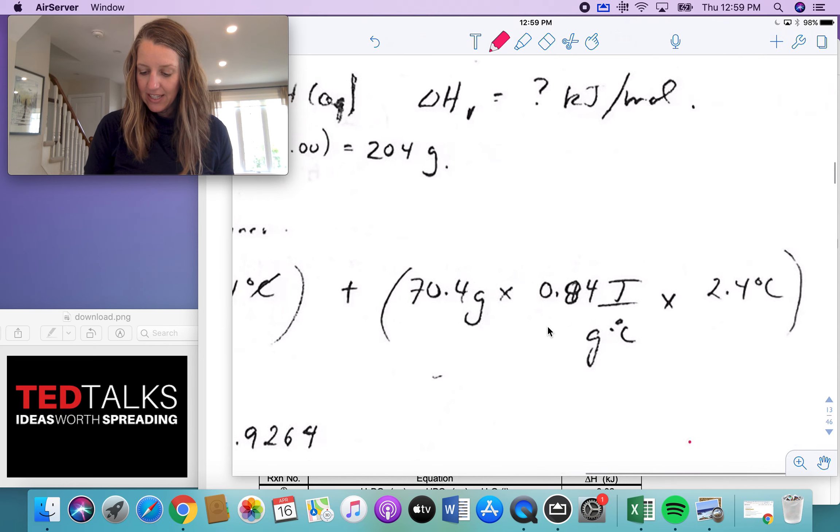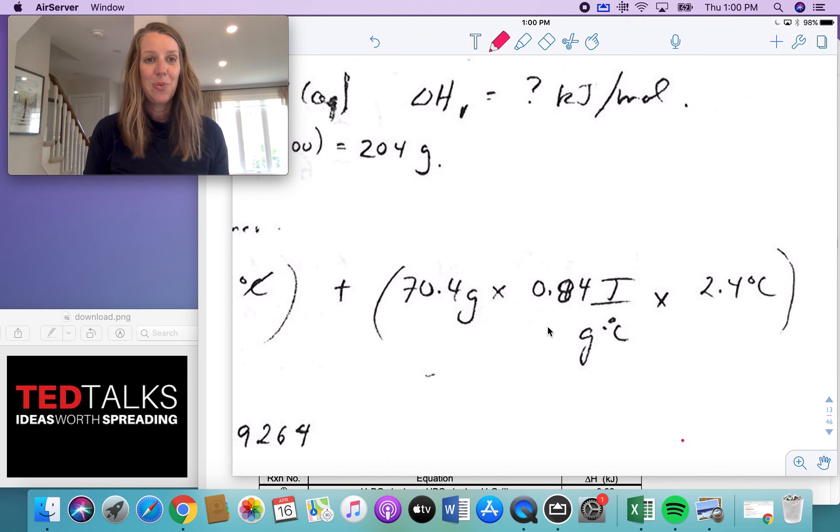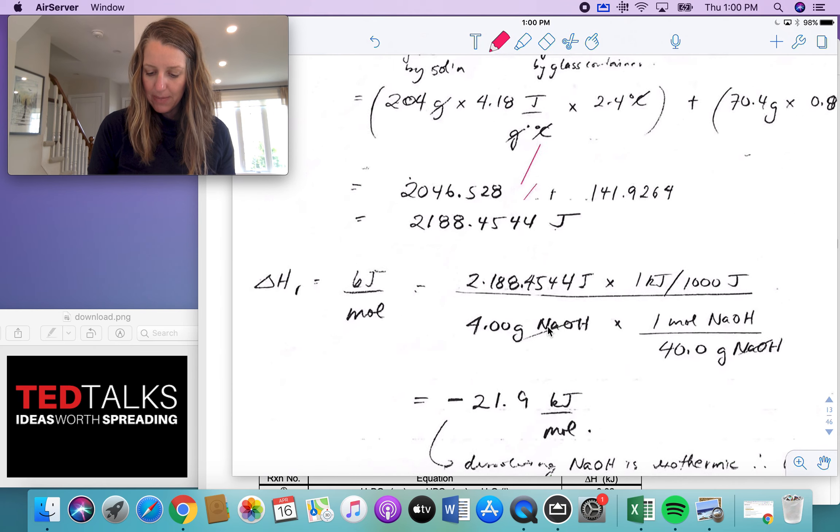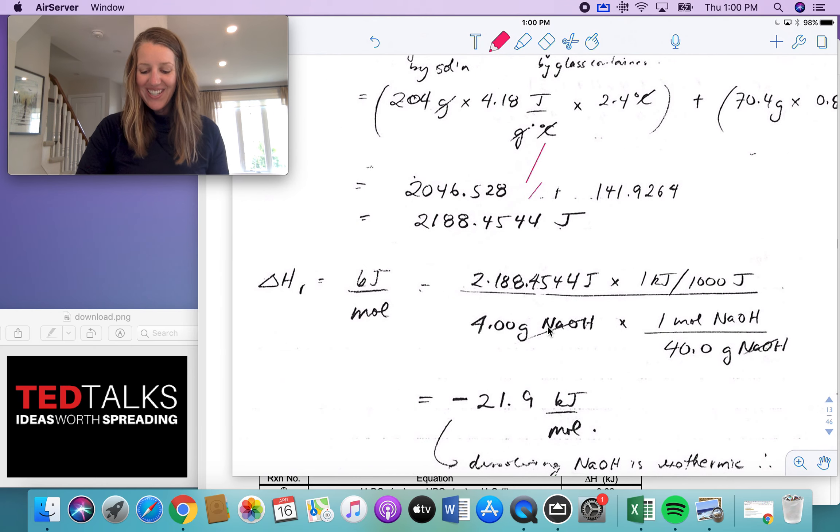Okay and then for the second part of this we're actually adding the heat of the glass container. So you've got mass of the glass which is 70.4 grams. We know that the amount of energy that it absorbs is 0.84 joules per gram per degree Celsius and that temperature change was 2.4. So add those two together and you end up with a pretty big value, 2,188.4544 joules. You can keep your decimal places here and then use your significant digit rule at the end.